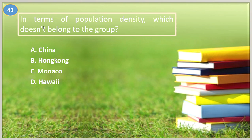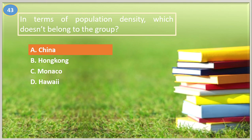Number forty-three. In terms of population density, which doesn't belong to the group? A. China, B. Hong Kong, C. Monaco, D. Hawaii. The answer is China. Population density is the average number of individuals per unit of area. In China, the population density is only 153 per square kilometer because their land area is very wide.